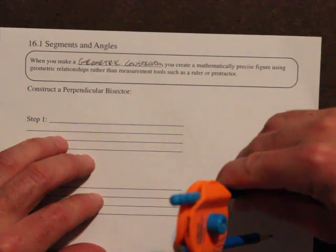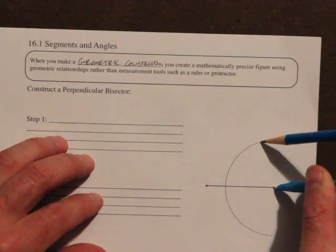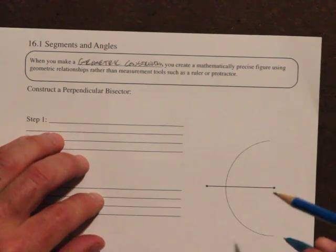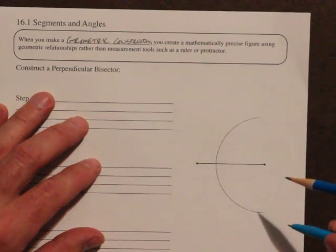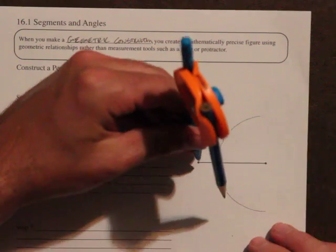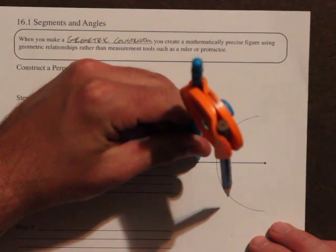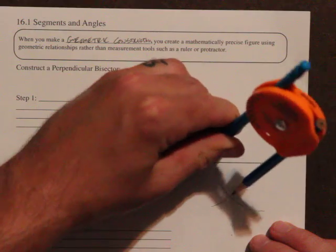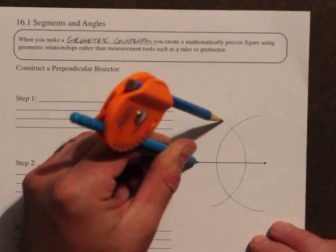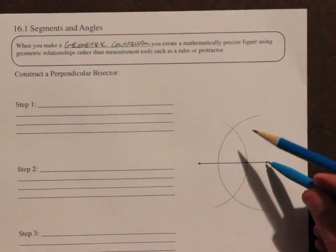An arc that starts way over here and ends way over here. And then I'm going to draw an arc from the other side of the line segment. So notice how I put the pointy end on the dot, which...